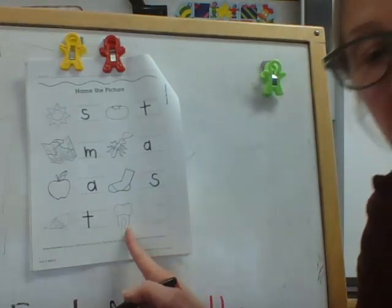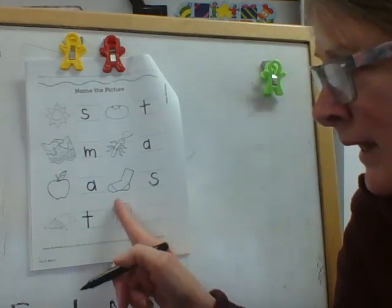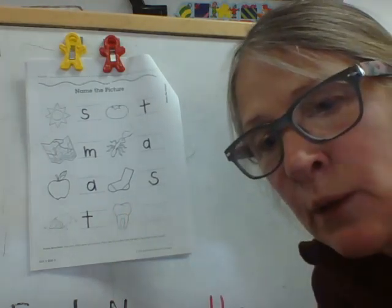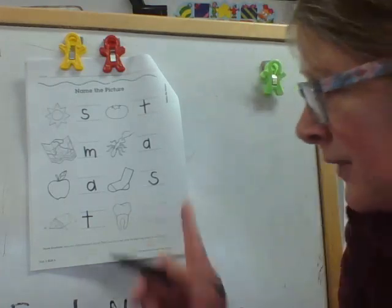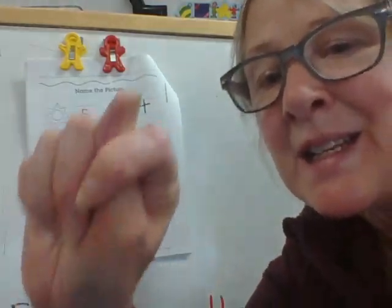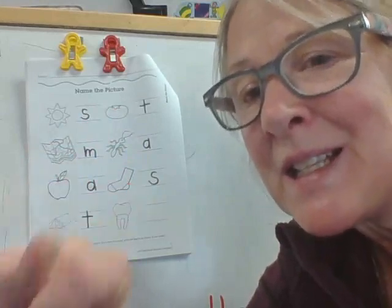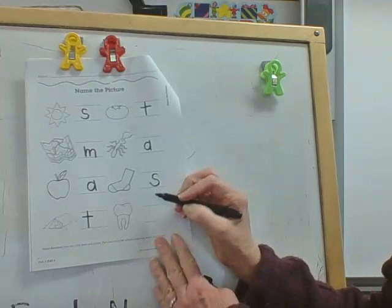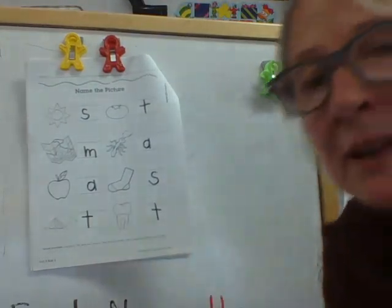We go on to the very last picture. That's an interesting picture — it is actually a tooth with the roots. We don't generally see the roots because they're inside of our gum line, but that is a tooth. Let's bounce on tooth. T-t-tooth. T-t-tooth. T-t-tooth. It's the letter T. Big line, little line — letter T.